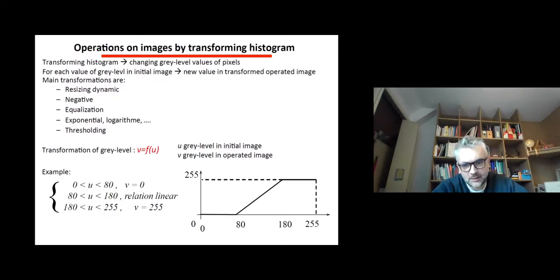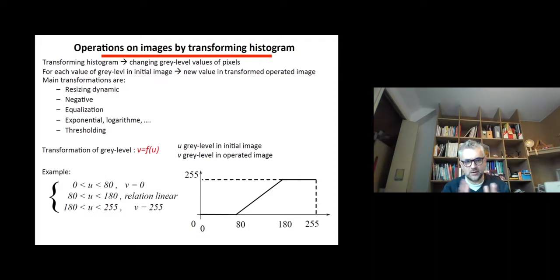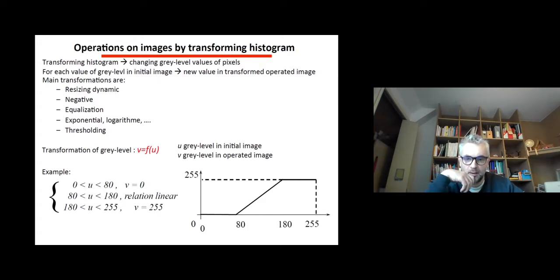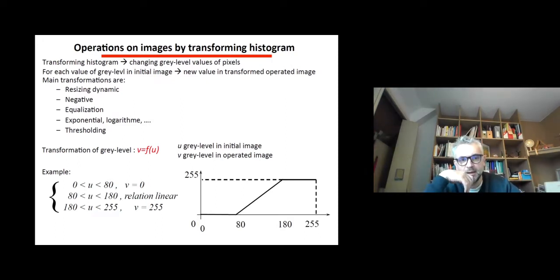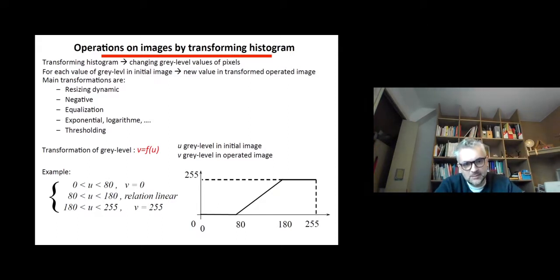The main transformations include resizing the dynamics — especially when an image's minimum value is not zero and maximum value is not 255 — it's possible to expand and resize the dynamics so your eye benefits fully from the available dynamic range. You can also take the negative of an image, apply equalization, thresholding, or enhance specific gray levels by exponential or logarithmic modification. Basically, this is a transformation that takes an input gray level, applies a function, and produces an output gray level.